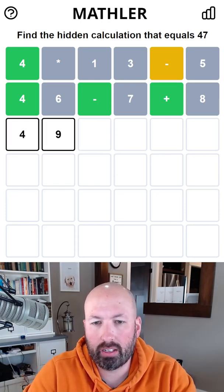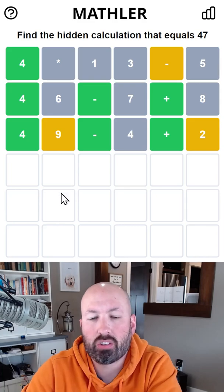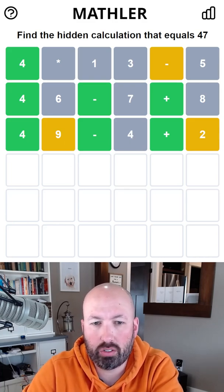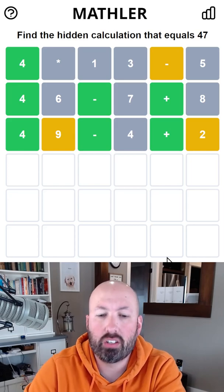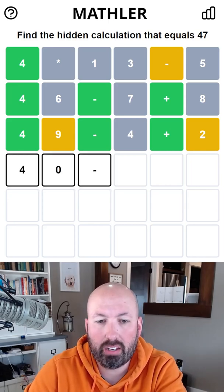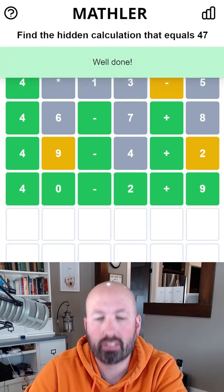I'm gonna go with 49 minus four plus two... so there's not another four. It's only nines, twos, or zeros. So we could do 40 minus two plus nine. That's got to be what it is. Okay, there we go.